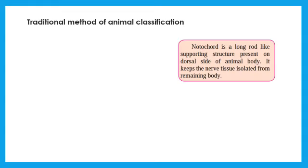Depending upon the presence or absence of the notochord, animal kingdom is divided into two groups, non-chordates and chordates. You must be wondering what is a notochord? It is a long, flexible, rod like structure present on dorsal that is back or upper side of animal body. In vertebrates, it develops into vertebrate column.